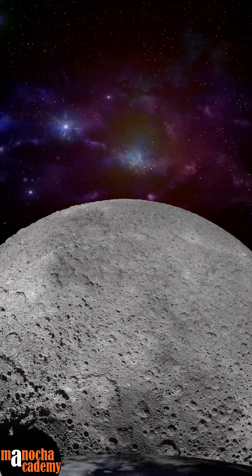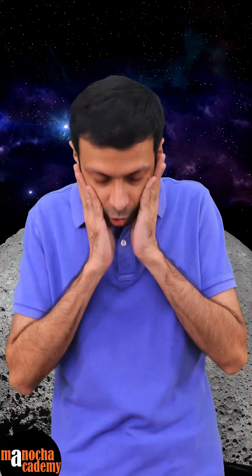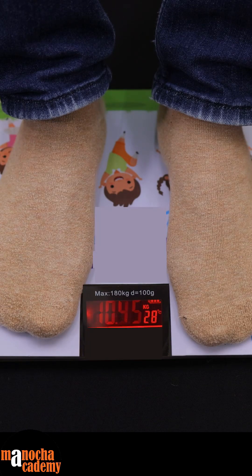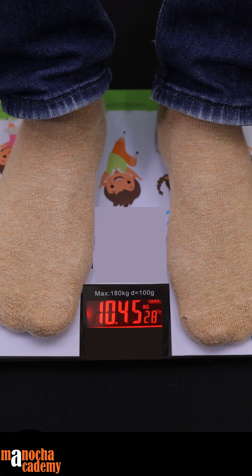Now let me magically go to the moon and let's once again see the reading. Oh my god, I'm only 10 kgs now. I just lost 50 kgs, so this weighing machine is definitely not giving the mass because mass should be constant.